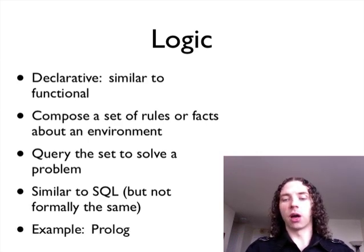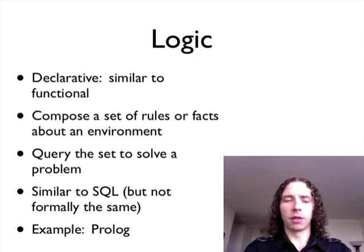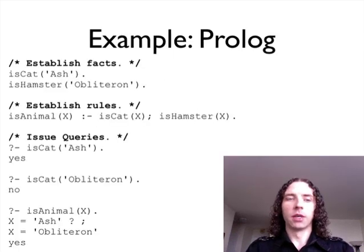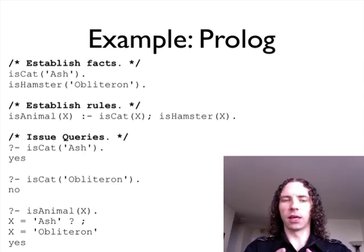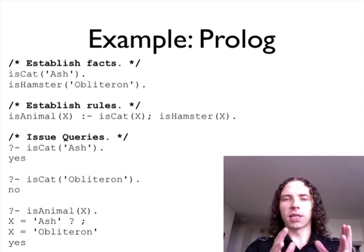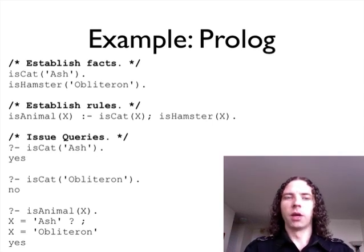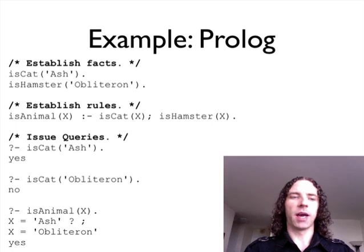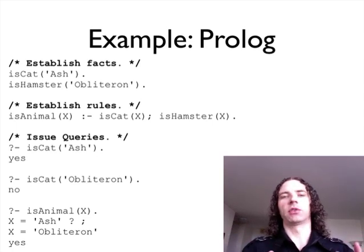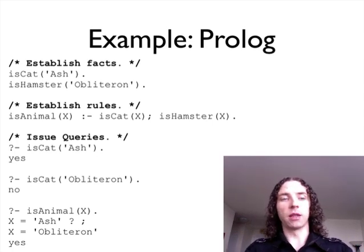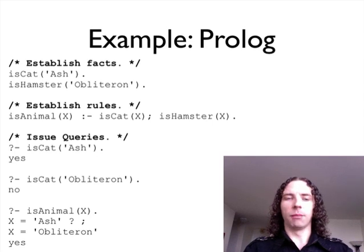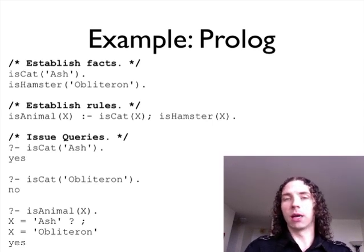So the example that's really common that I know I've used in the past as well, but again just in an educational context, is Prolog. So this is a very contrived example of what that means. It's not entirely obvious at first what it's doing. So at first I'm just going to establish some facts. I'm going to say there's isCat, which will be Ash, my cat, there's isHamster, Obliteron, which is a Futurama reference. And within that we're going to establish some rules and say that anything is an animal if it's either a cat or a hamster.